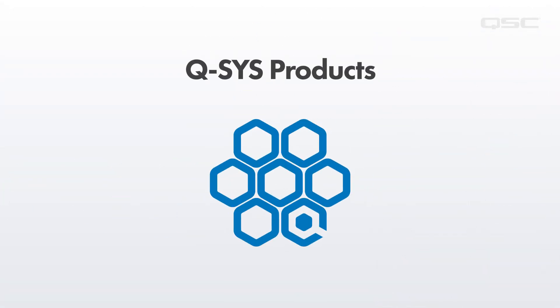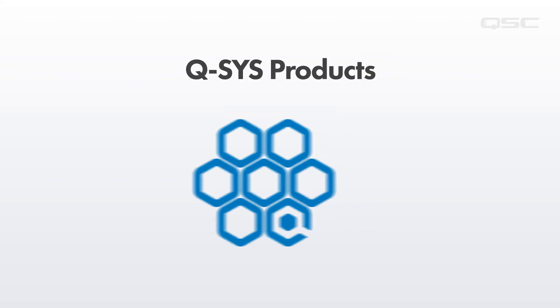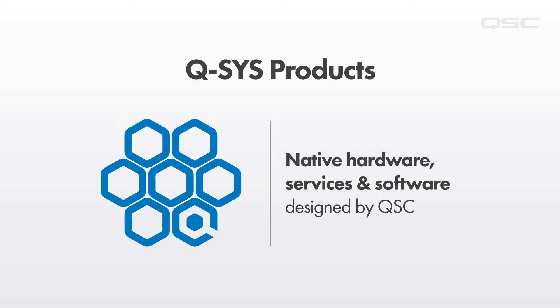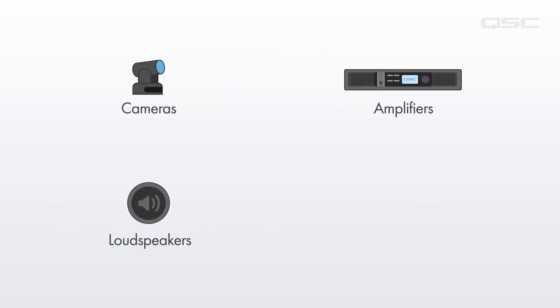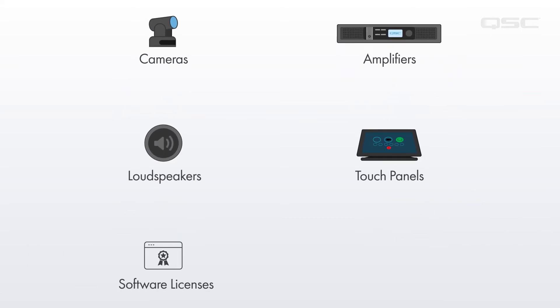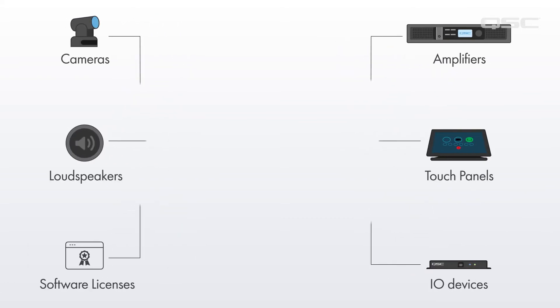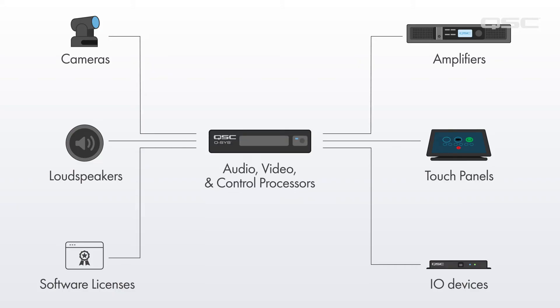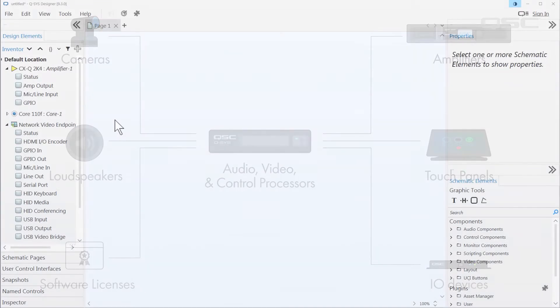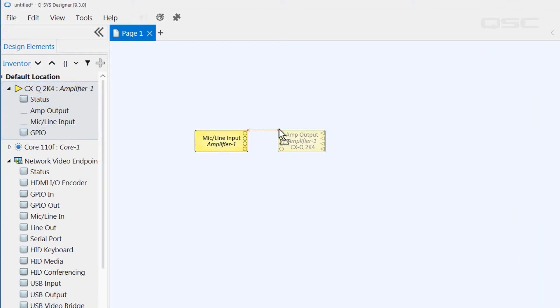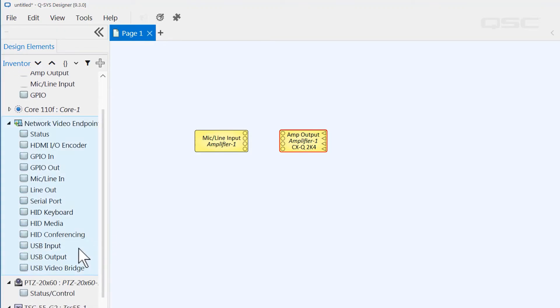The needs of the system are going to be dictated by the kinds of devices that you're going to drive with your design. Q-SYS offers an extensive portfolio of native Q-SYS hardware devices, services, and software that are designed to be driven directly by the OS. This ever-growing portfolio includes Q-SYS conference cameras, amplifiers, loudspeakers, touch panels, software licenses, I/O devices, and the vast resources of digital signal processing, control processing, and video routing components. Using native Q-SYS products makes your integration much easier, as every one of these devices is designed with drag-and-drop functionality within the software and has been rigorously tested against everything else in the Q-SYS platform.